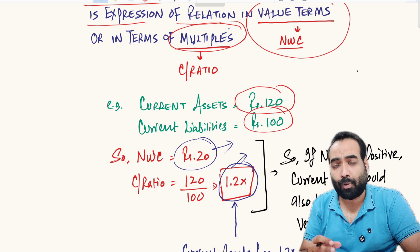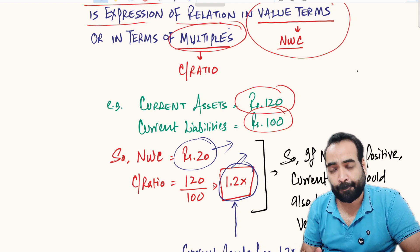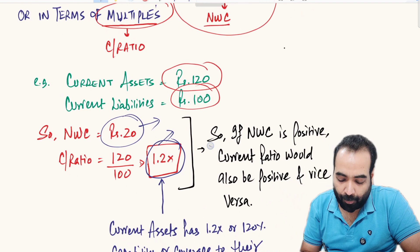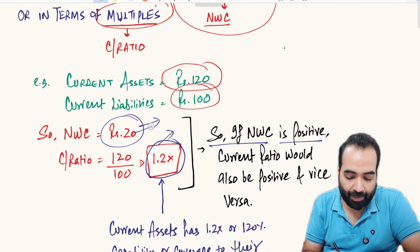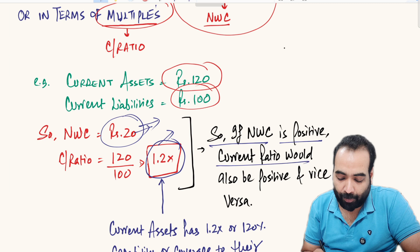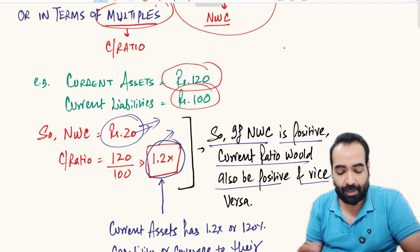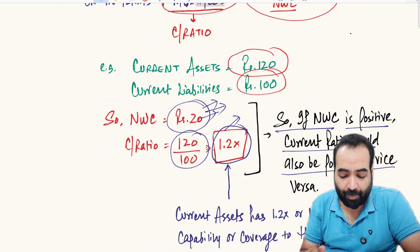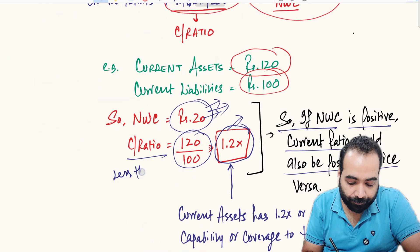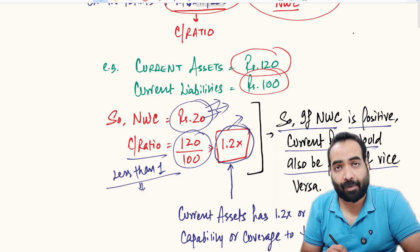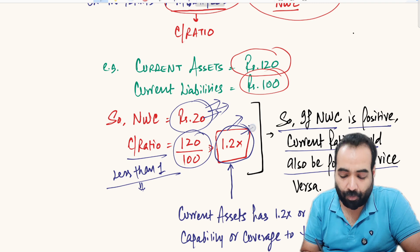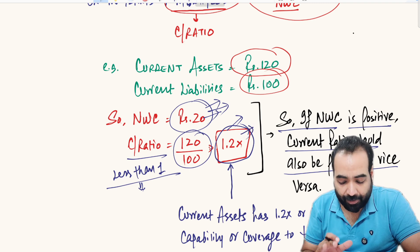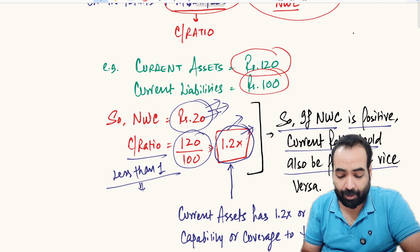This is just a different way of presentation, although the actual crux of both is more or less the same. If NWC is positive, the current ratio will also be more than 1, and vice versa. If NWC is negative, the current ratio will be less than 1. When we say the current ratio is positive that means it is more than 1; when negative, it means less than 1.